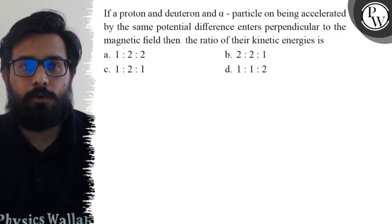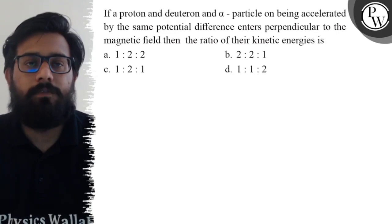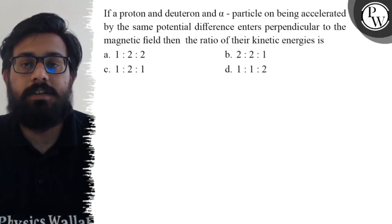Hello, let's see the question. If a proton, deuteron, and alpha particle are accelerated by the same potential difference and enter perpendicular to the magnetic field, then the ratio of their kinetic energies is: